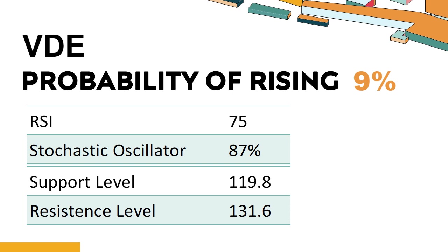When the stochastic oscillator rises above the 80 level, it is usually considered overbought, indicating that the stock may be due for a price pullback. An overbought condition occurs when a stock's price rises too fast and too high in a short period of time, and can be a sign that buying pressure has exhausted.